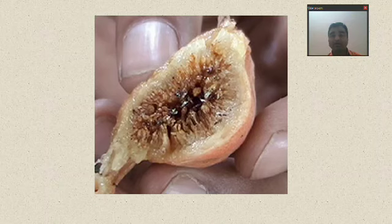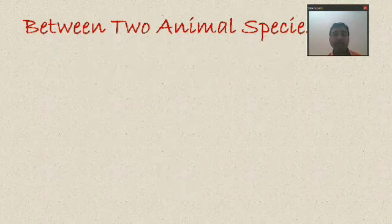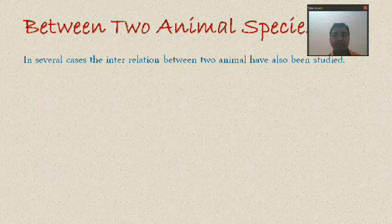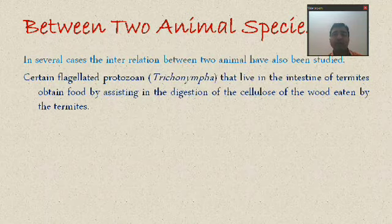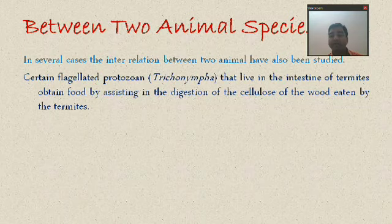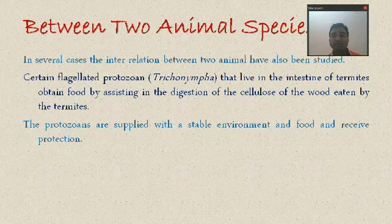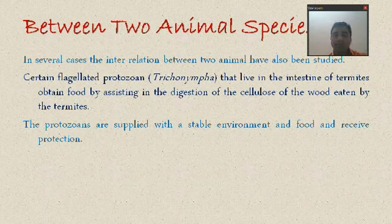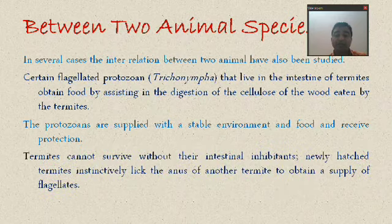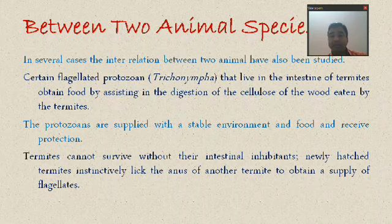Another example is between two animal species: the flagellate protozoan Trichonympha and the termite. Termites eat wood which contains cellulose, and cellulose is difficult to digest. Trichonympha helps the termite in digestion of cellulose, and in return the termite provides food and living space. This association is mandatory for both the protozoan and the termite.